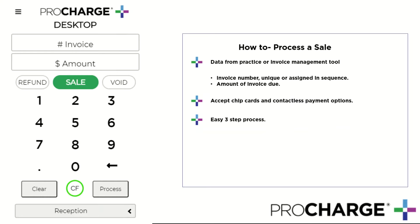You will also need a dollar amount for the related invoice. You can accept chip card payments or contactless payment options like Apple Pay, Samsung Pay, or Google Pay using the ProCharge desktop payment device, the PAXS 300.